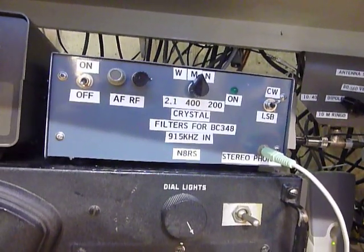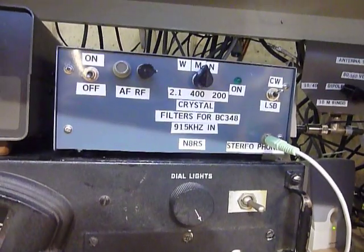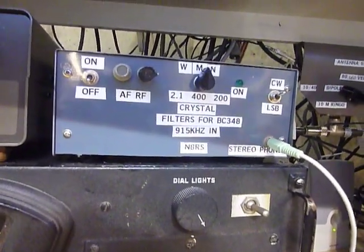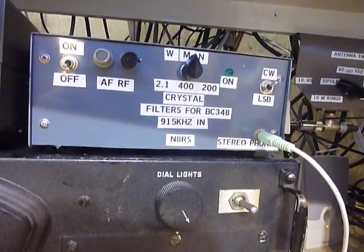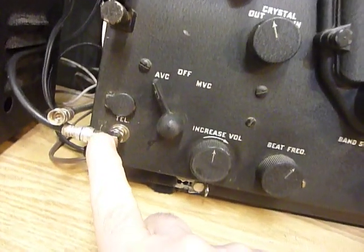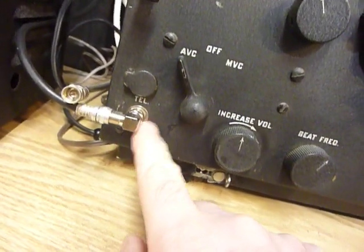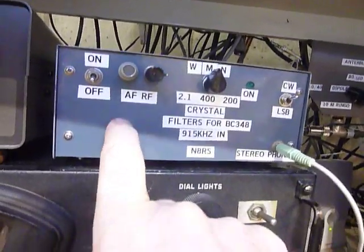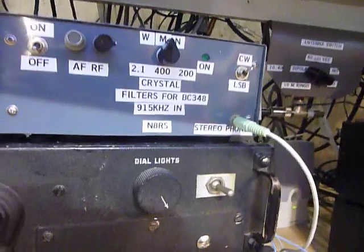So I hooked it back up. All it needs to connect is 12 volts DC, and then you connect the 915 kilohertz IF which comes out of this F connector right here. This little cable goes around to the back where you find another F connector. That's all there is to it.